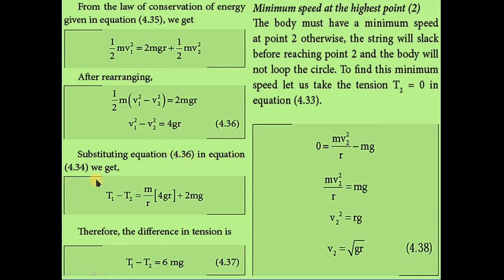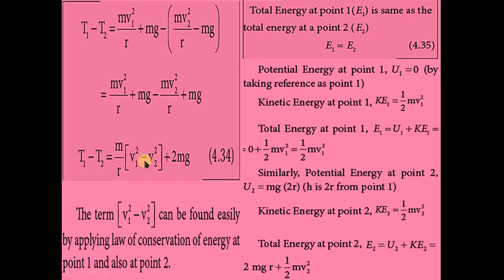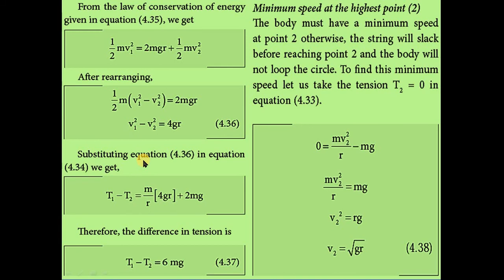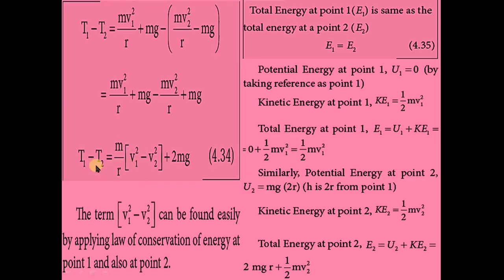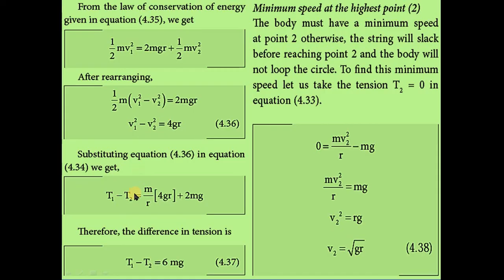Substituting V1 squared minus V2 squared equals 4gR into the tension difference equation: T1 minus T2 equals M by R times 4gR plus 2Mg. The R's cancel: 4Mg plus 2Mg equals 6Mg. Therefore, the difference in tension is T1 minus T2 equals 6Mg.